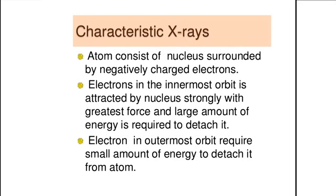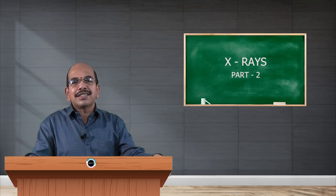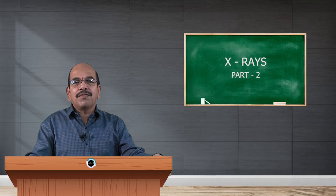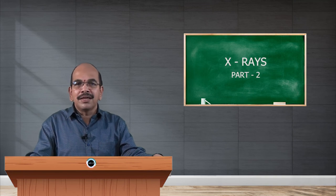Electrons in the innermost orbit are attracted by nucleus strongly with greatest force and large amount of energy is required to detach it from the atom. Now just look at this energy level diagram of a particular atom in the target metal.